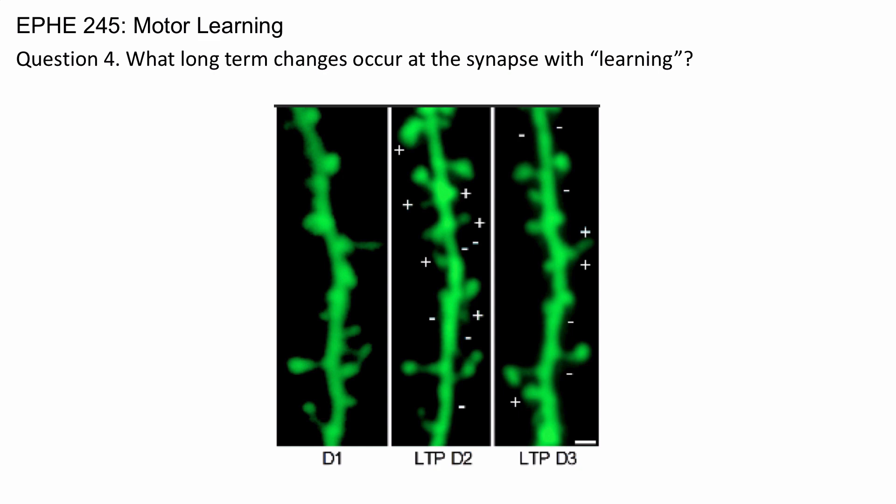And what you see is day one and day two and day three. And what you'll notice is on day one, the neuron is in its normal state, but on day two and day three, after long-term potentiation, you see growth.